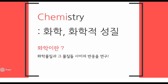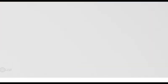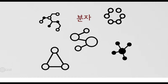화학은 물질 그리고 그 물질들 사이의 반응을 연구하는 학문입니다. 이 세상의 모든 물질은 분자라는 단위체로 이루어져 있습니다. 사진 속 여자의 머리카락도 다양한 분자들로 이루어져 있는 것이죠. 분자는 그림에서 보이는 것처럼 여러 동그라미가 서로 연결되어 이루어져 있는데요. 분자를 이루는 이 동그라미를 바로 원자라고 합니다.